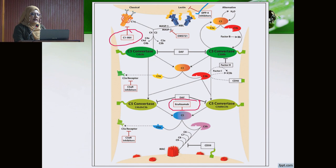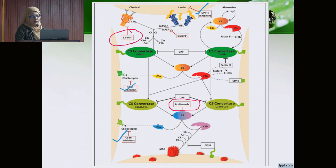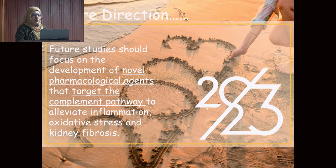Other agents are under investigation, including C3a receptor antagonists and C5a receptor antagonists. One of these is Avacopan, which has been advocated for ANCA-associated vasculitis in recent KDIGO guidelines. Future studies should focus on developing novel pharmacological agents that target the complement pathway to alleviate inflammation, oxidative stress, and kidney fibrosis.